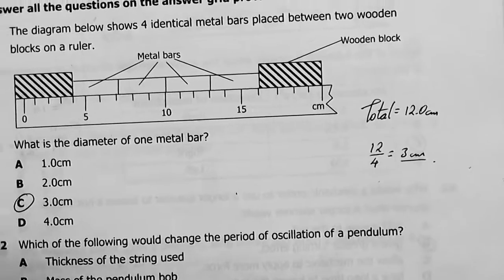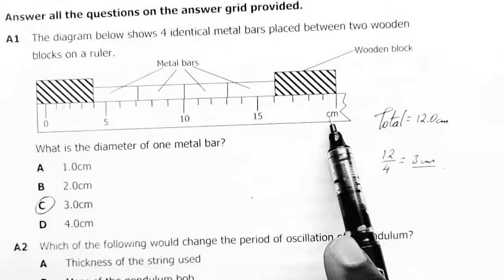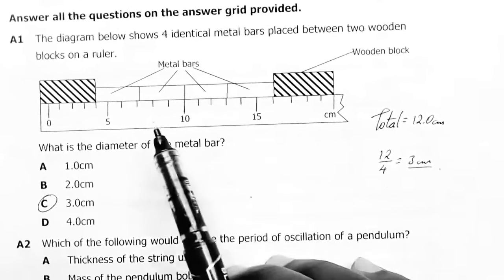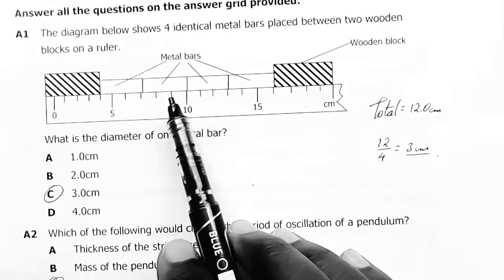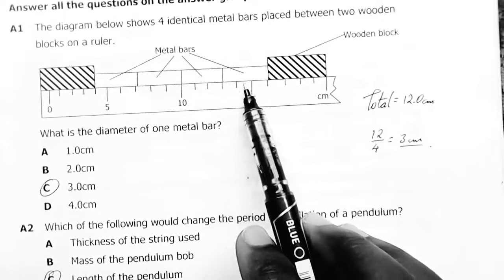When you look at this, the scale is in centimeters, and these are actually centimeters. From here to here it's 10, so just count these: one, two, three, four, five, six, seven, eight, nine, ten, eleven, twelve.